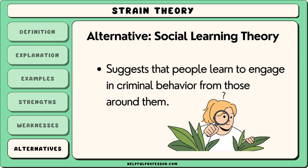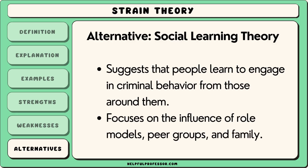An alternative to strain theory is social learning theory. This theory suggests that people learn to engage in criminal behaviour from those around them, especially if they see others getting rewarded for it. While strain theory emphasises the frustration of not reaching goals as a reason for crime, social learning theory focuses on the influence of role models, peer groups and family. It shows how people may learn criminal behaviour by observing and imitating others, especially in environments where crime is more common.